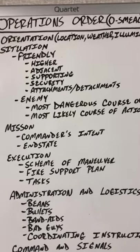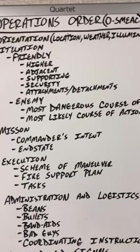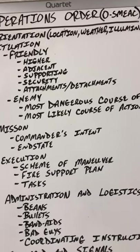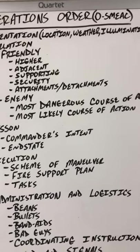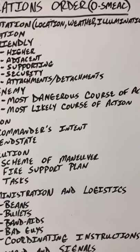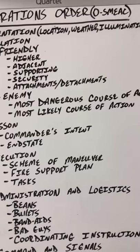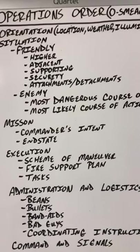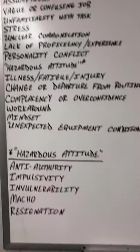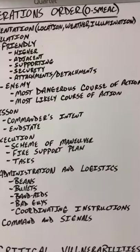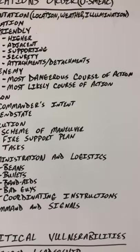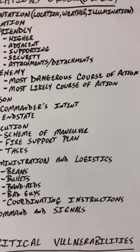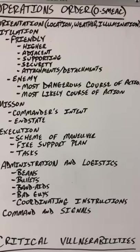Supporting elements are your welders, insulators, and scaffolders — what reputation and skill sets do they bring? Security covers requirements for a security escort if you're operating in a country that requires one. Attachments and detachments account for your personnel and ensure you understand who's coming and going, and what skill sets they bring — like welders, TGR guys, and instrument people. The enemy is the error precursors — poor human performance. The most dangerous course of action results in a fatality, a life-altering injury, or catastrophic quality failure.